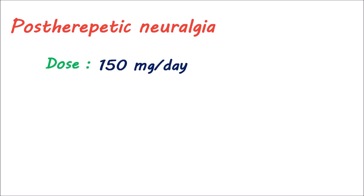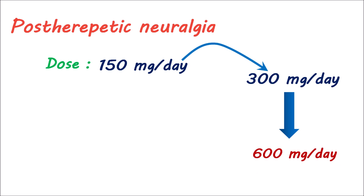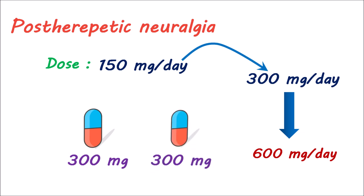In the treatment of postherpetic neuralgia, pregabalin should be given at an initial dose of 150 mg per day, given in divided doses. Within one week of treatment, based on the efficacy and tolerability of the patients, the dose can be increased up to 300 mg per day, again in divided doses. If even after two to four weeks of pregabalin treatment no significant pain relief is observed, the dose can be further increased up to 600 mg per day — given as 300 mg in the morning and 300 mg at night, or as 200 mg given three times daily.